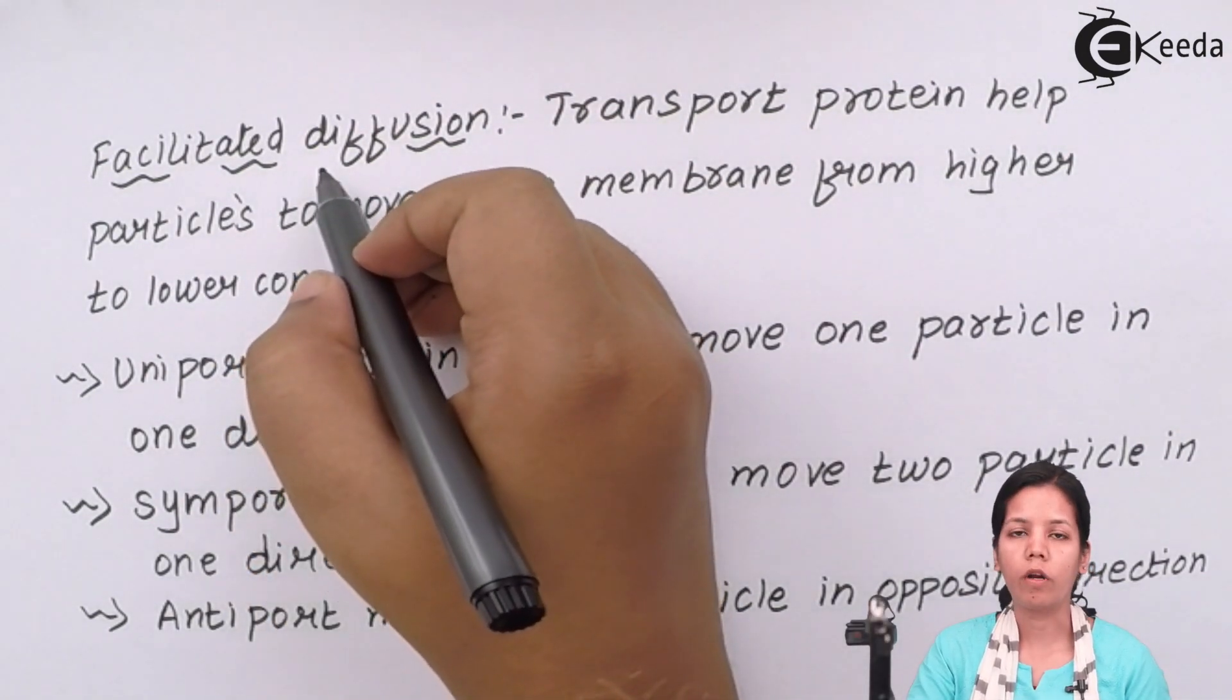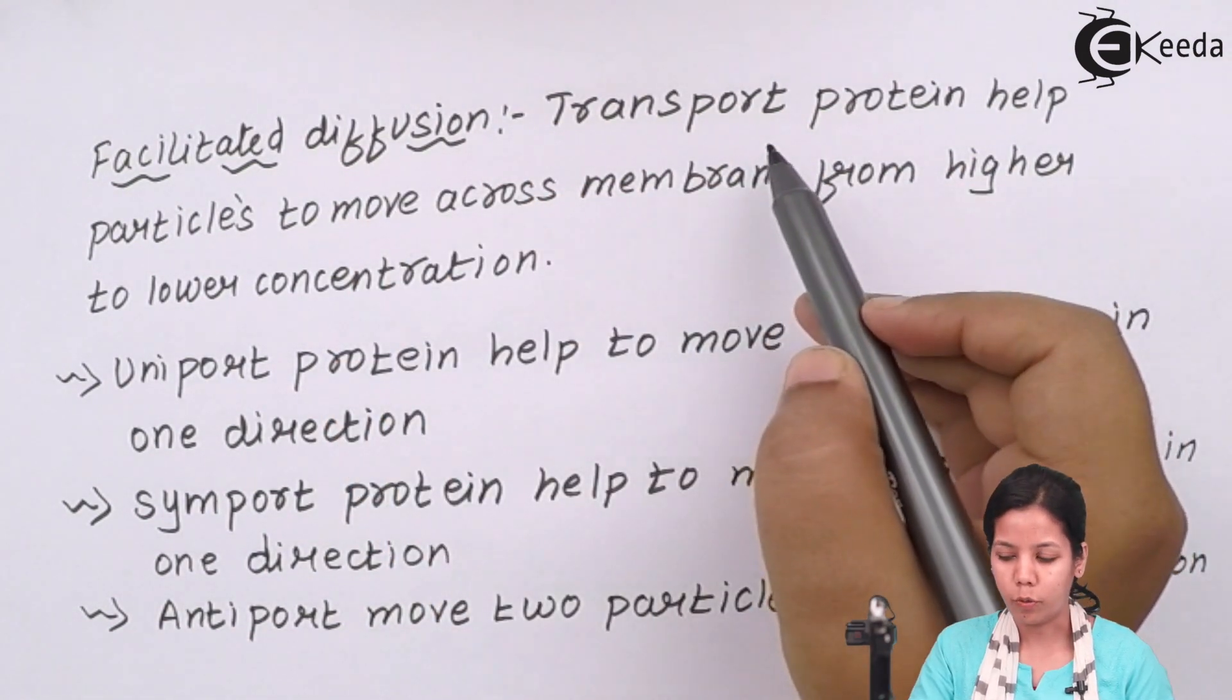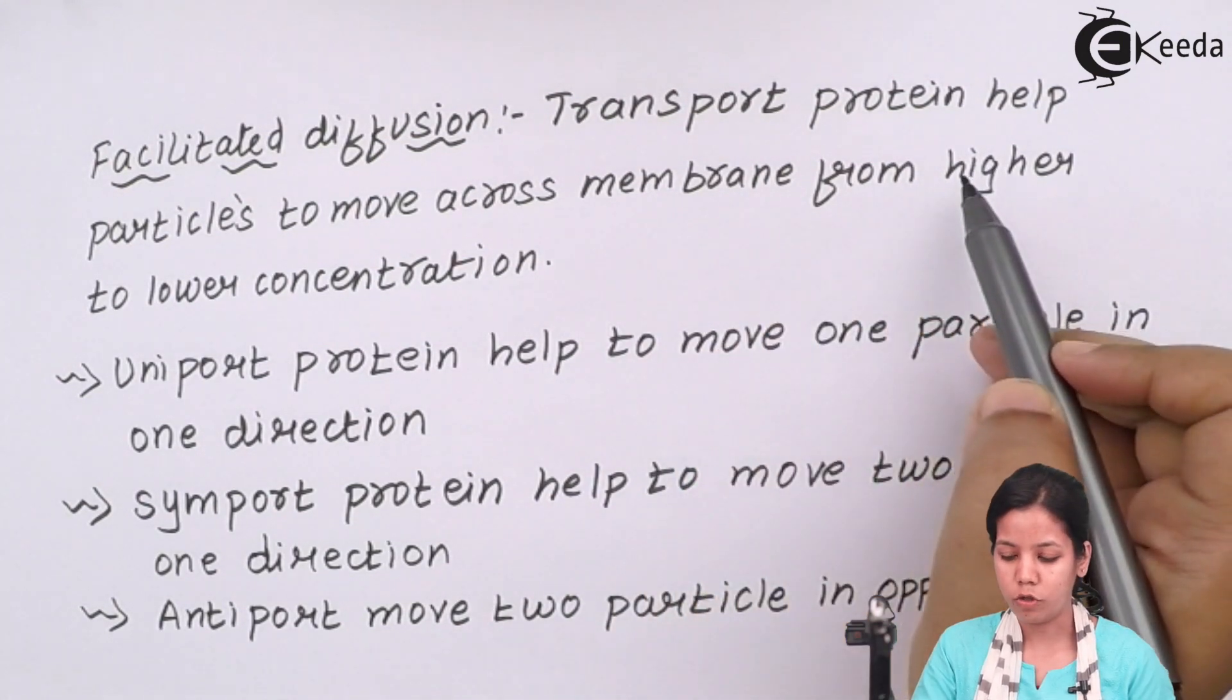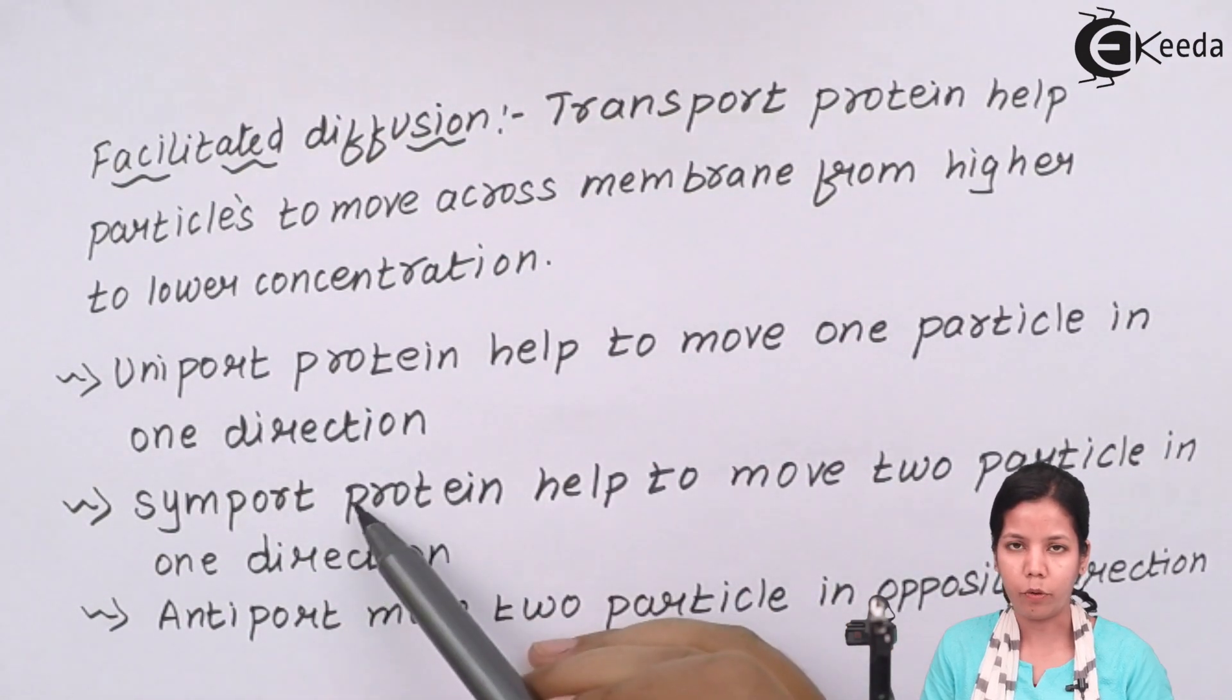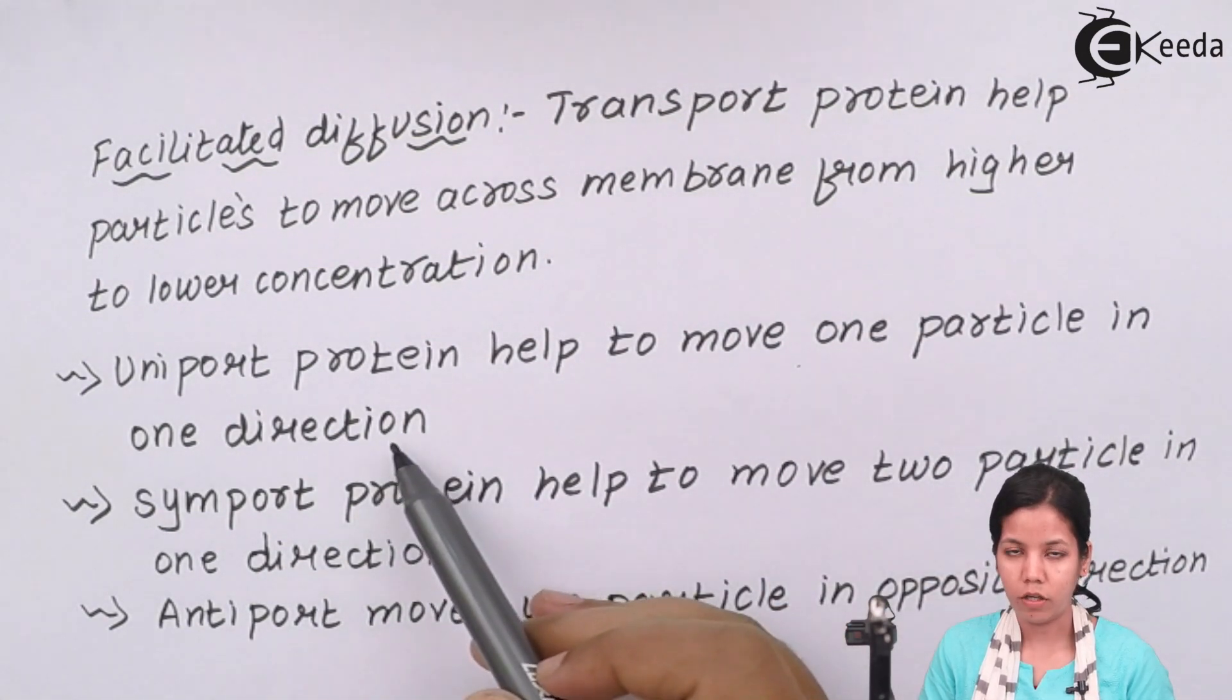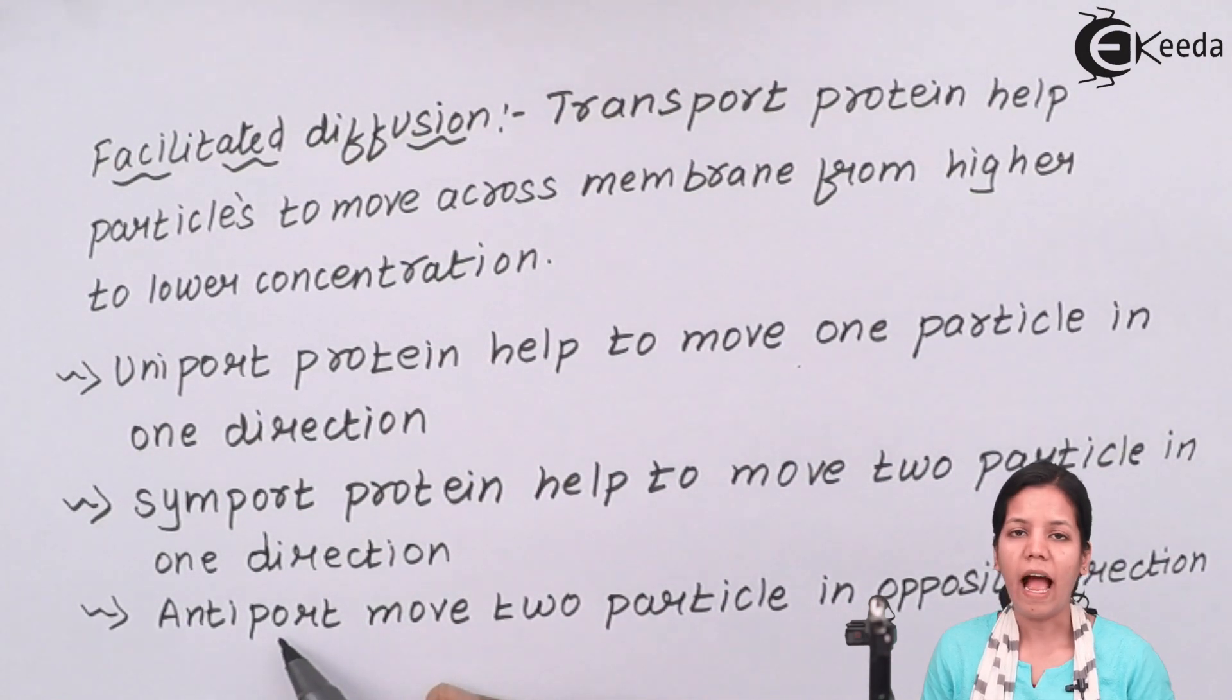Facilitated diffusion or you can say the diffusion that helps or that takes place with the help of certain protein molecules. In facilitated diffusion, transport proteins help to move the particles across membranes from a region of higher concentration to a region of lower concentration. And these proteins that help in the movement of particles are uniport protein, symport protein and antiport protein. Uniport protein basically help to move one particle in one direction. Whereas your symport proteins help to move two particles in one direction. When I say antiport, it means in opposite direction. Antiport proteins move two different particles in two different directions.